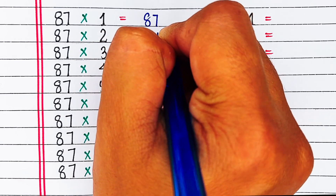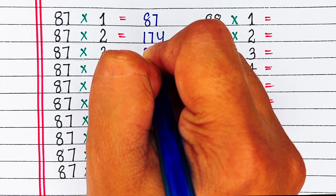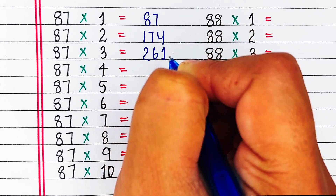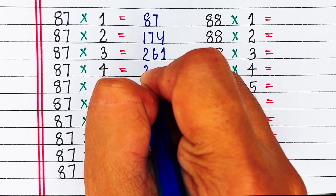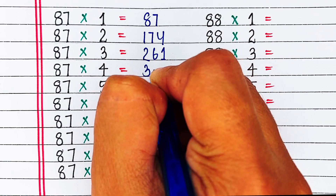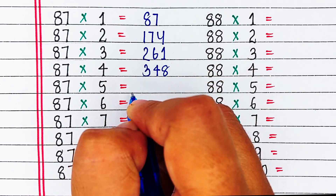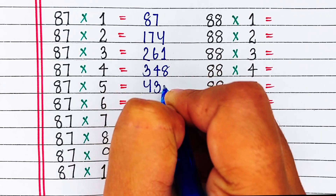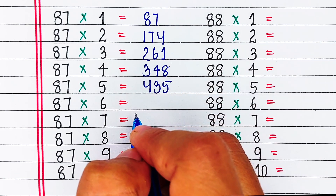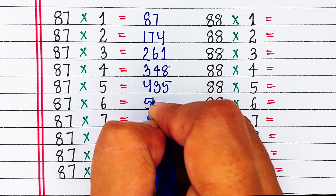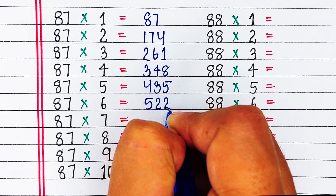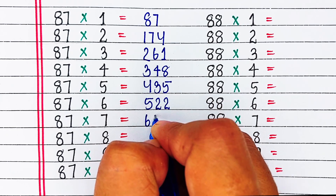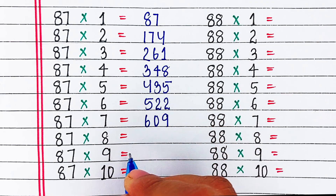Next is table of 87. 87 1s are 87, 87 2s are 174, 87 3s are 261, 87 4s are 348, 87 5s are 435.